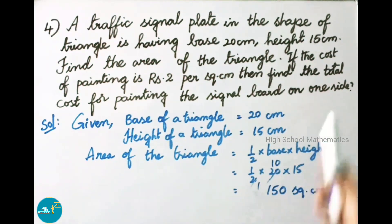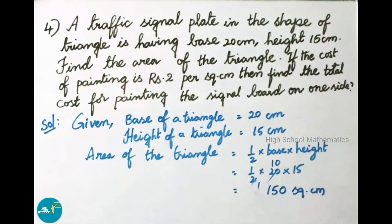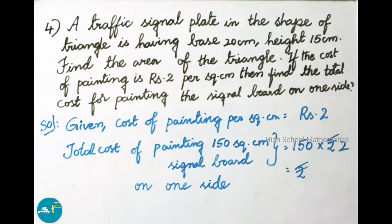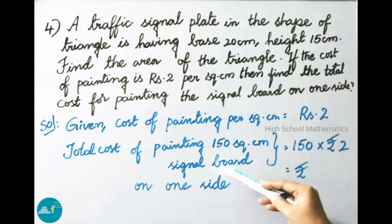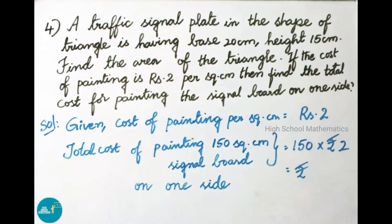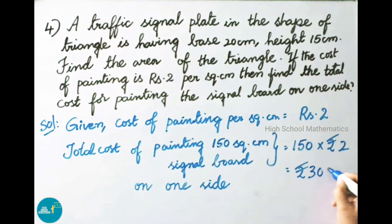In our question, cost of painting per square centimeter is 2 rupees. Total cost for painting the signal board on one side equals 150 into 2 rupees, which is 300 rupees. Therefore total cost of painting is 300 rupees.